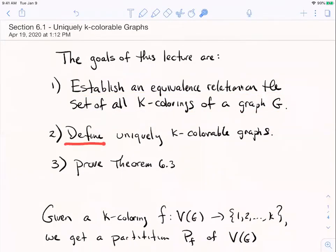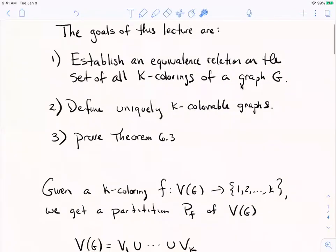I'm going to use that equivalence relation to define the main notion, uniquely k-colorable graphs, then we'll look at a couple of examples and then end with explaining the proof of theorem 6.3. So let's just get to work here.